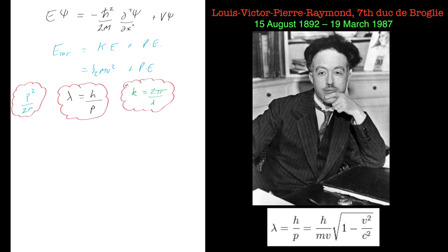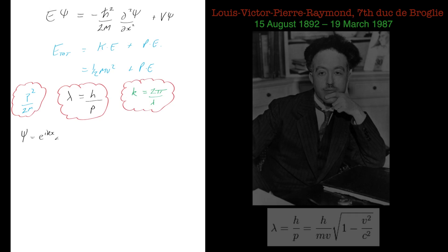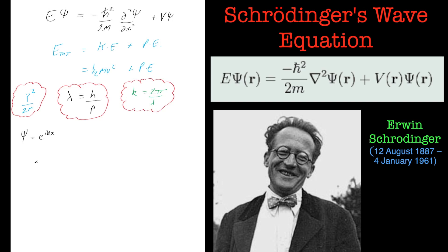Another one we're going to need is the value for psi. Now psi equals e to the ikx. We're not determining the time-dependent form of this equation — it's the time-independent Schrödinger wave equation today. So we're just going to use this part of the wave function that we saw in the previous tutorial.